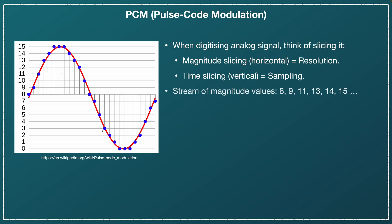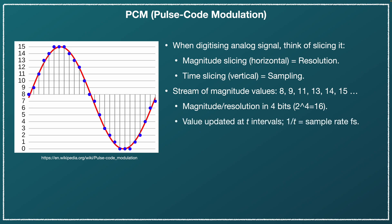So now we would get a stream of data: 8, 9, 11, 13, 14, 15, and so on. So 4-bit resolution, and this is updated at the sample rate. And this is basically how a PCM signal — pulse code modulation signal — is formed.